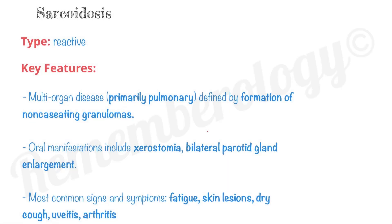Sarcoidosis is a reactive condition. The key features are multi-organ disease — primarily pulmonary — defined by the formation of non-caseating or non-necrotizing granulomas. This is opposite to the granulomas that occur in tuberculosis, which are necrotizing or caseating granulomas.